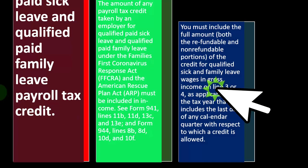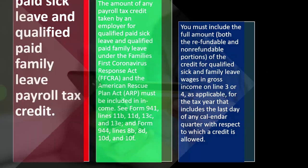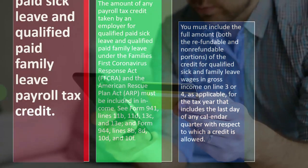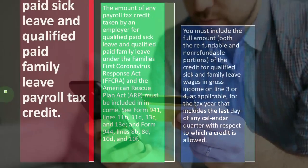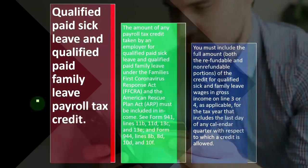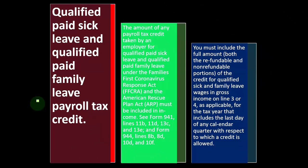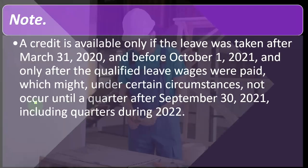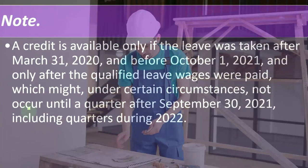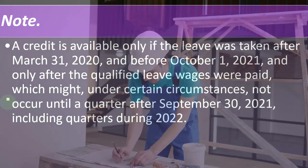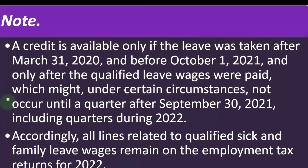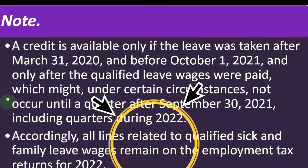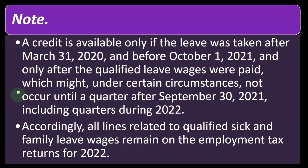You must include the full amount — both the refundable and non-refundable portions of the credit for qualified sick and family leave wages — in gross income on Line 3 or 4 as applicable, for the tax year that includes the last day of any calendar quarter with respect to which a credit is allowed. Note: a credit is available only if the leave was taken after March 31st, 2020 and before October 1st, 2021, and only after the qualified leave wages, minimum wage, and tips were paid. Accordingly, all lines related to qualified sick and family leave wages remain on the employment tax returns for 2022.